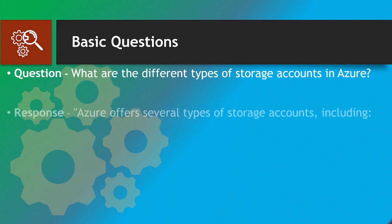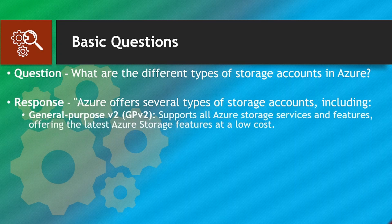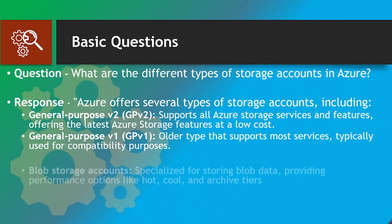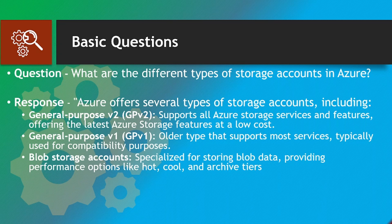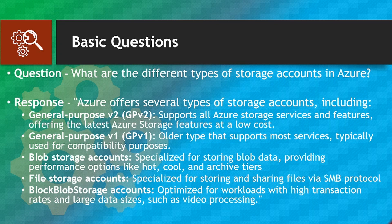What are the different types of storage accounts in Azure? Azure offers several types of storage accounts including: General Purpose V2 (GPv2), which supports all Azure storage services and features at a low cost; General Purpose V1 (GPv1), an older type that supports most services typically used for compatibility purposes; Blob Storage Account, specialized for storing blob data with performance options like hot, cool, and archive tiers; File Storage Account, specialized for storing and sharing files via SMB protocol; and Block Blob Storage Account, optimized for workloads with high transaction rates and large data sizes such as video processing.